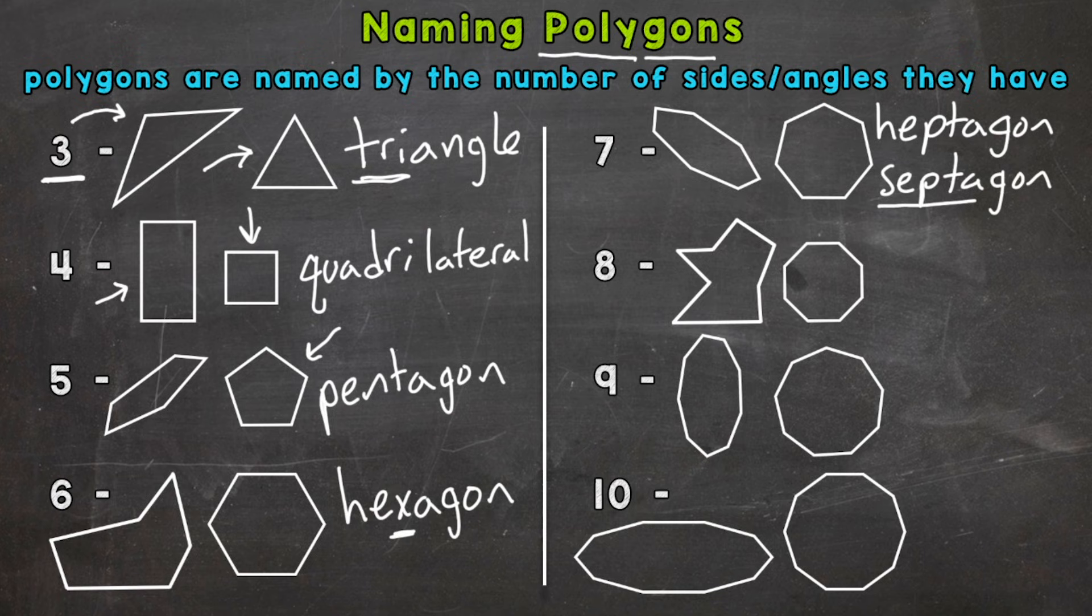Next, eight sides and angles—octagon. You can remember this one because it kind of sounds like octopus, and octagon and octopus have eight in common. So that's how you can remember that one. Octa, that prefix, means eight.